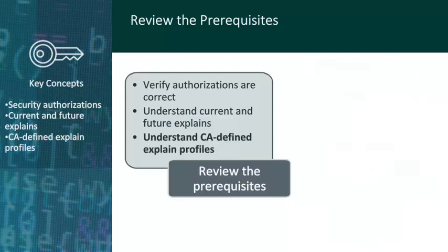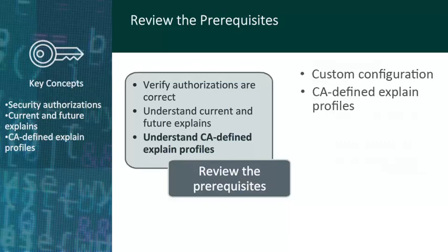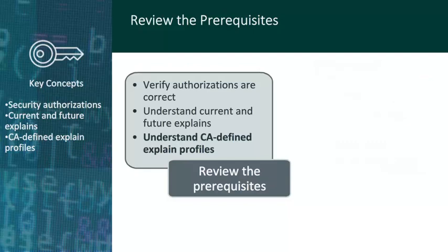Lynn has several options when setting up her access path comparison. She can create a custom configuration, use the CA defined explain profiles, or template-modify the CA defined profiles. Lynn reviews the options and decides that the CA defined explain profiles meet her needs.